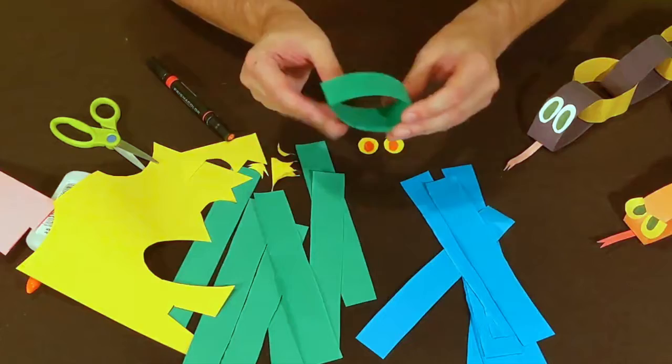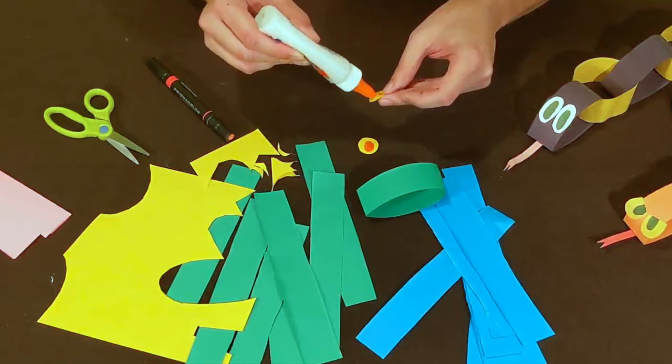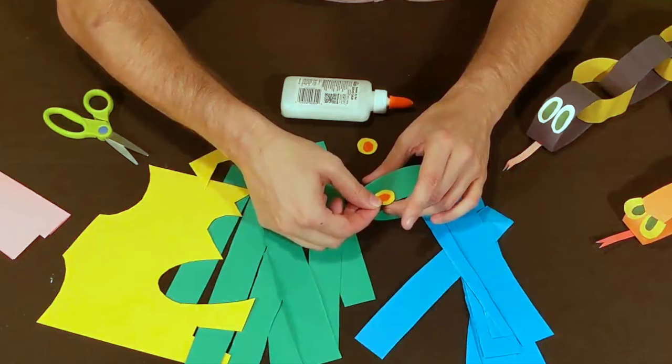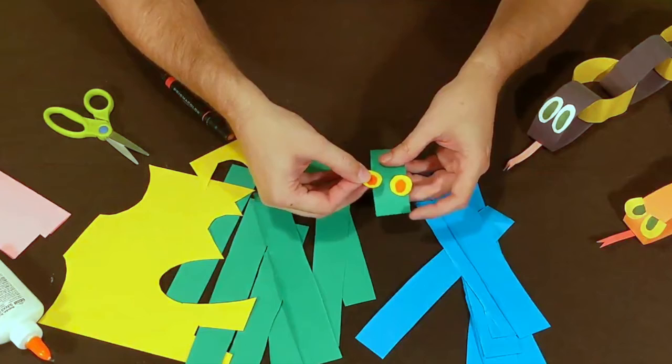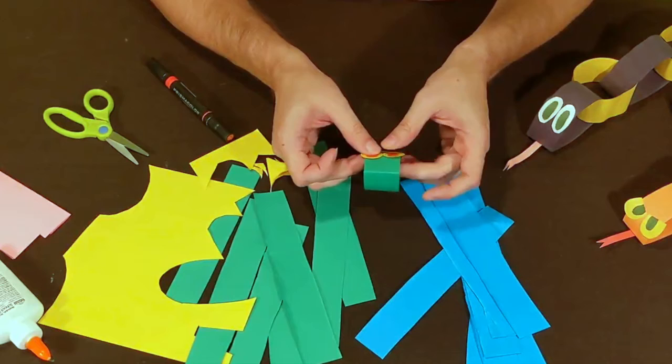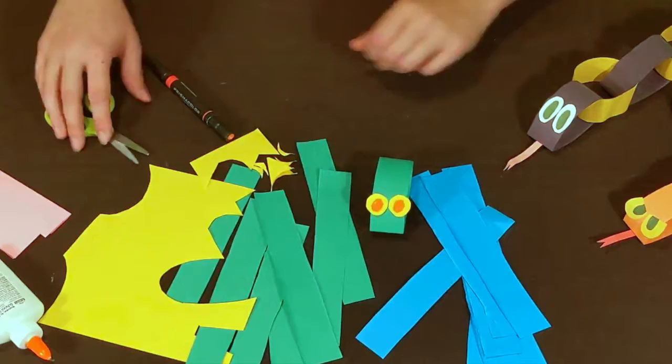All right, so next thing I'm going to do is glue those around on top of the head, right up here, right above where we folded it. Grab the glue, put a little bit of glue on here, nice thin layer. Put a little bit of glue right there, same thing with the other one. And there we go, there we've got our snake's eyes. Looks like a fairly friendly snake so far.